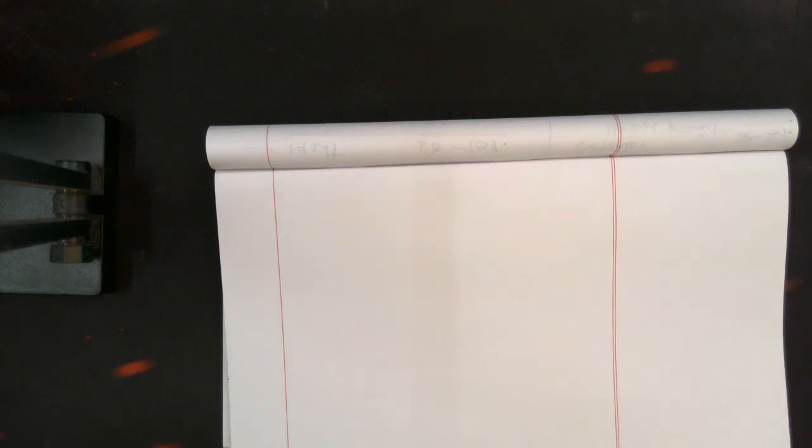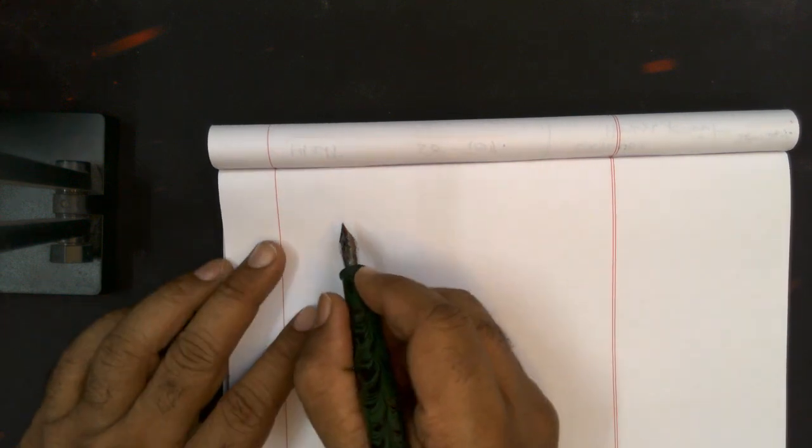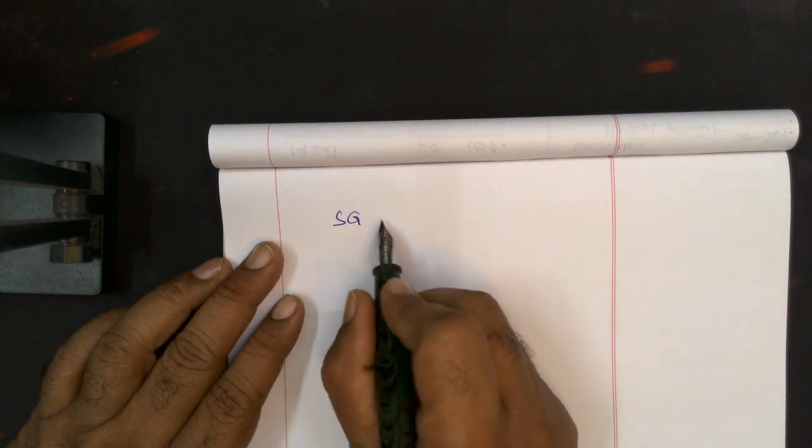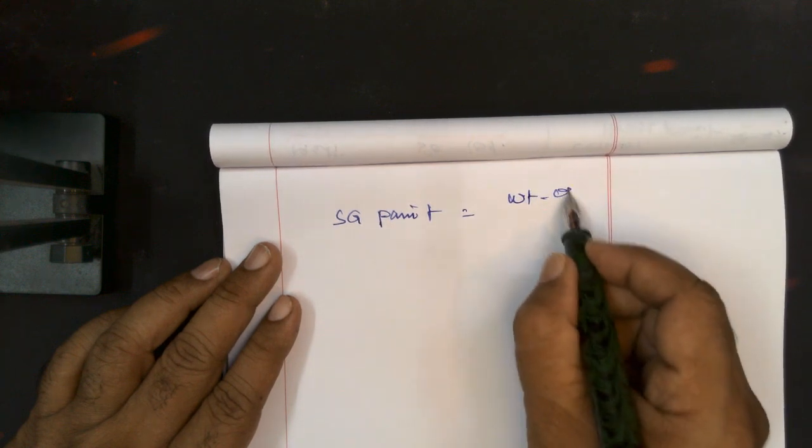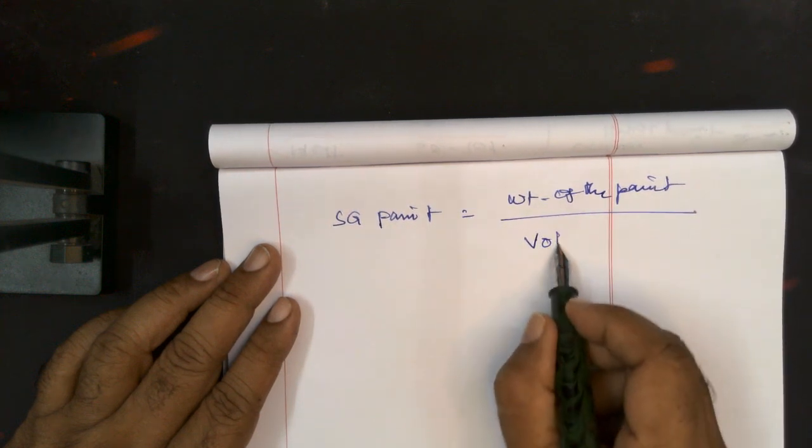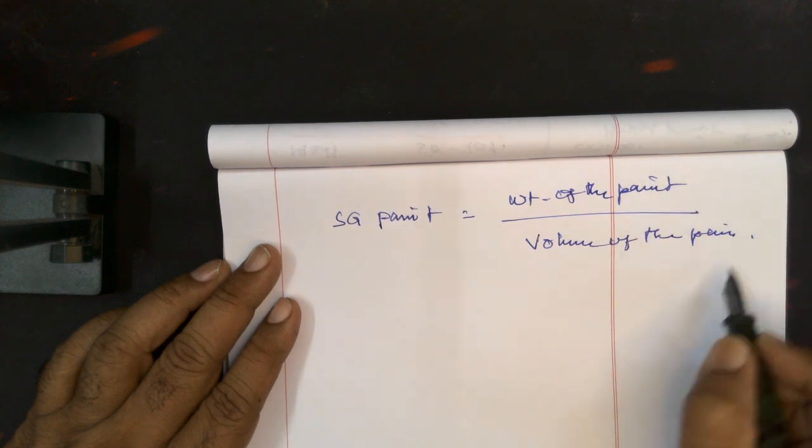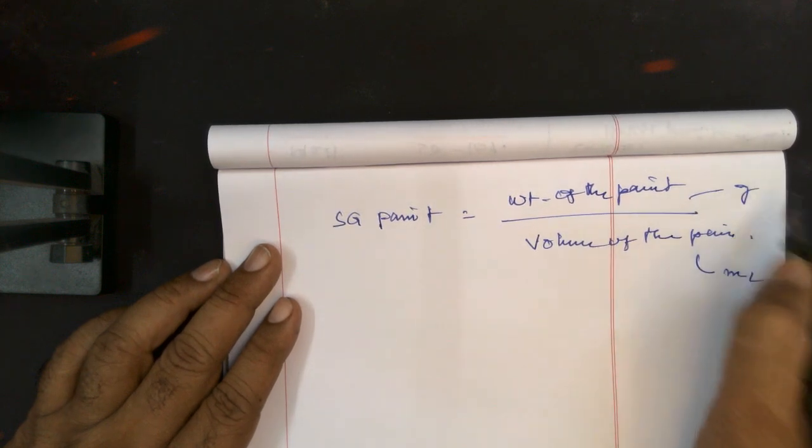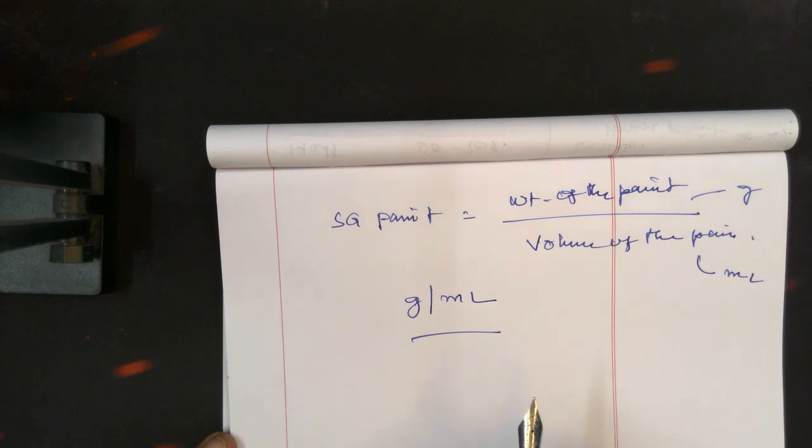We should know something about the specific gravity or density of the paint. All ingredients will be in terms of weight. Let me consider the specific gravity of the paint. How to calculate this? Very simple - take the weight of the paint, simply speaking, divided by the fixed volume of the paint, that's all. This is given in mL, this is given in grams, so usually it is given in grams per mL. That describes the specific gravity of the paint.